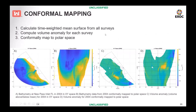The first step in the conformal mapping analysis is to calculate the time-weighted mean surface from all of your surveys. The second step is to compute the volume anomaly for each survey — basically the volume above or below that mean surface. The third step is to conformally map those results to polar space and reproject them on a rectangular grid. In figure A you have the example bathymetry from 2004 in Cartesian space; in B that bathymetry has been conformally mapped to polar space, with theta on the x-axis and rho — the distance from the inlet mouth — on the y-axis. Figures C and D show the volume anomaly for 2004 in both spaces.